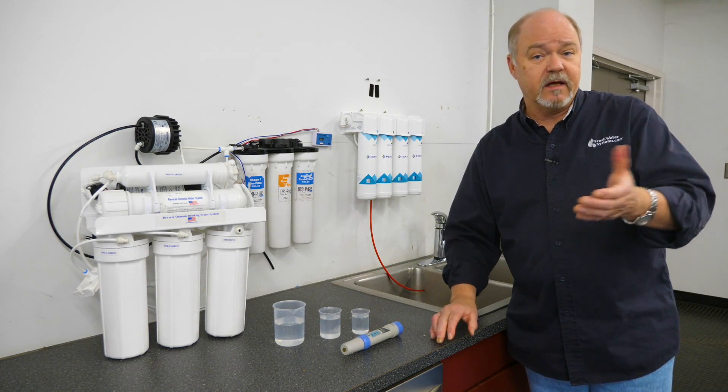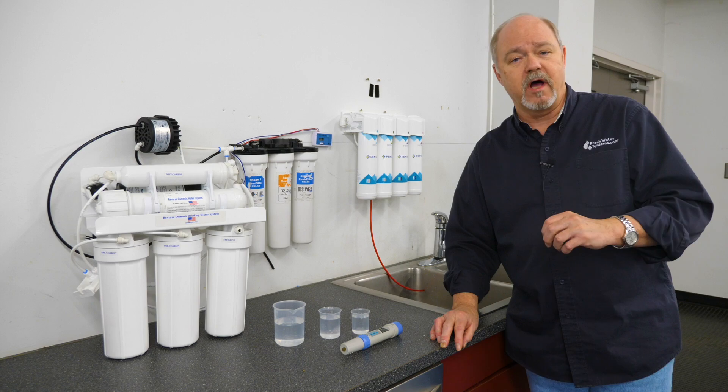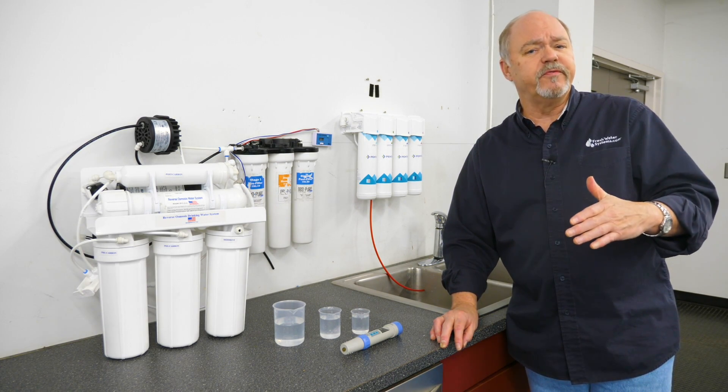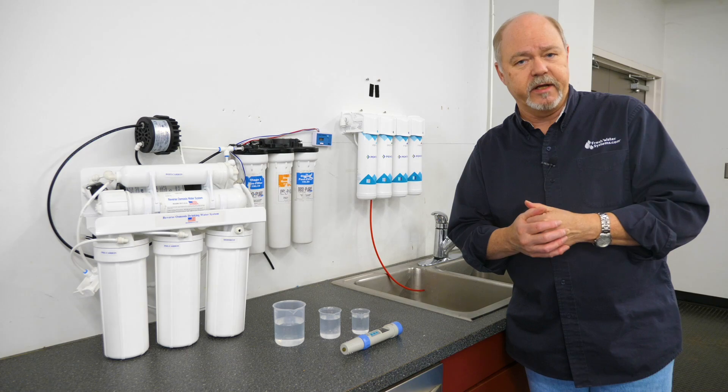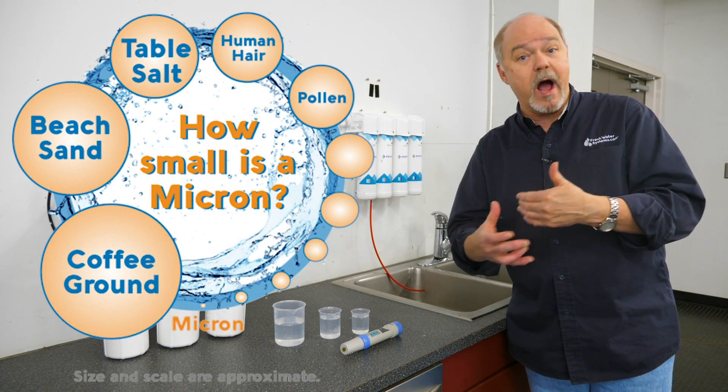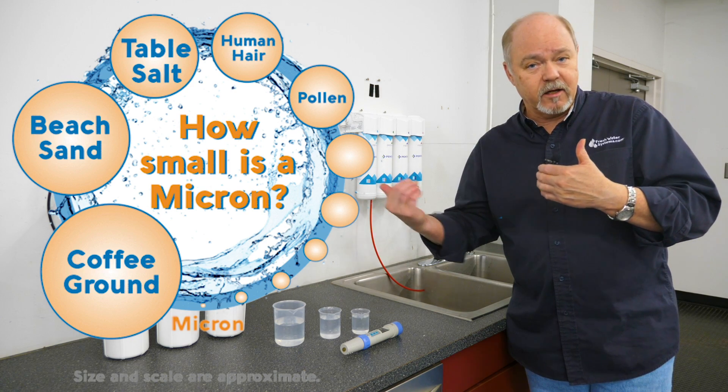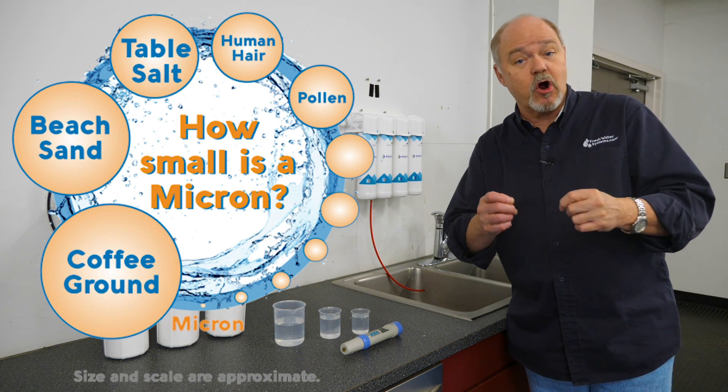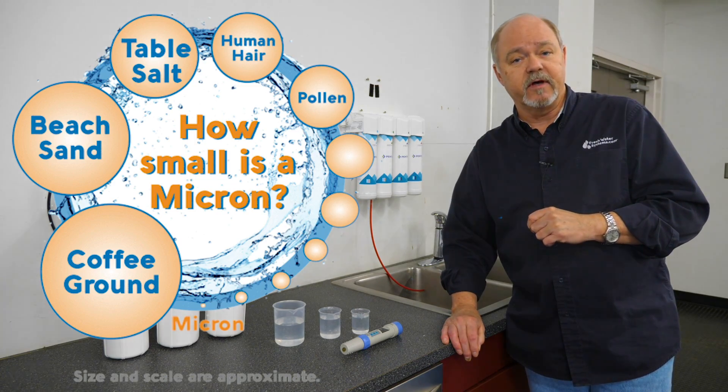Carbon and this particular carbon was a half micron and it's rated for cyst reduction. Well a lot of carbon filters come with a micron rating and that is addressing strictly the porosity of the media and it's going to stop any particulate that's larger than the porosity of the filter.